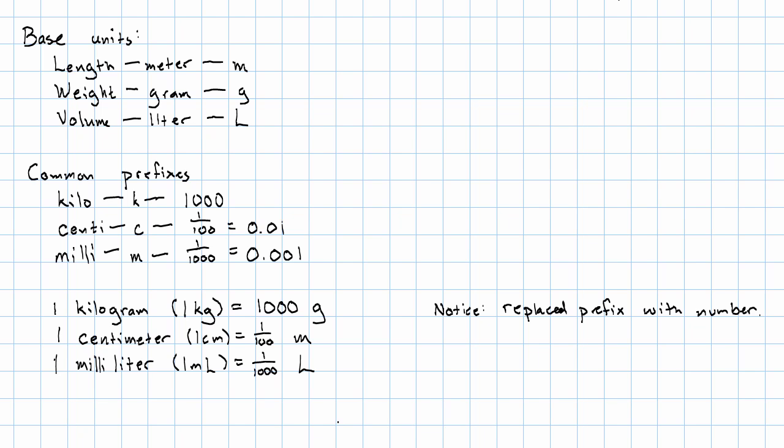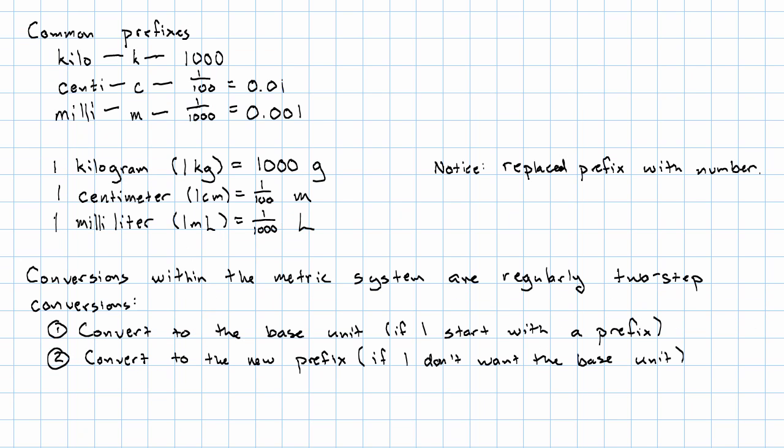If we want to do conversions within the metric system, they'll regularly be two-step conversions. If I want to convert within the metric system, I'll typically first convert to the base unit if I start with a prefix, and then convert to the new prefix if my goal is not the base unit to begin with.